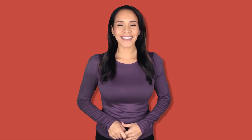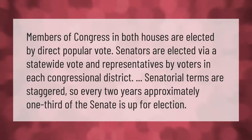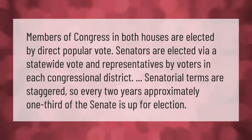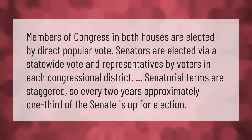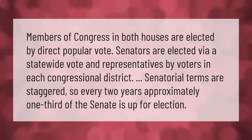Members of Congress in both houses are elected by direct popular vote. Senators are elected via a statewide vote and representatives by voters in each congressional district. Senatorial terms are staggered so that every two years approximately one-third of the Senate is up for election.